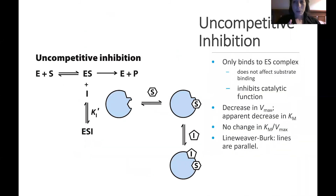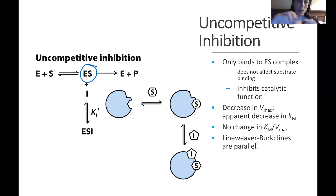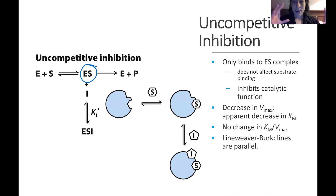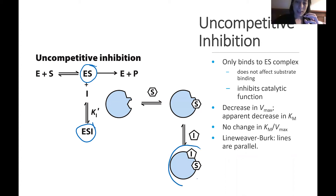Another type of reversible inhibition is called an uncompetitive inhibitor. This is an inhibitor that does not bind to the same point as the normal substrate. It binds to the enzyme-substrate complex — the substrate has to be there first. Once the enzyme-substrate complex is formed, the inhibitor can bind to that complex and slow down the rate of formation of product, giving you the enzyme-substrate-inhibitor all bound together instead of your product. So the inhibitor binds to another spot on the enzyme.